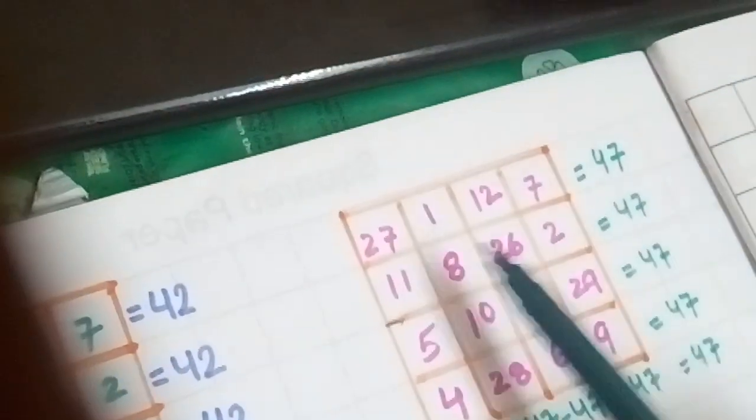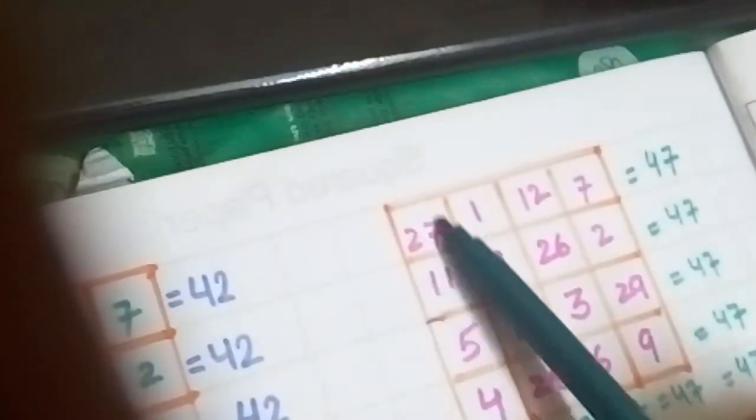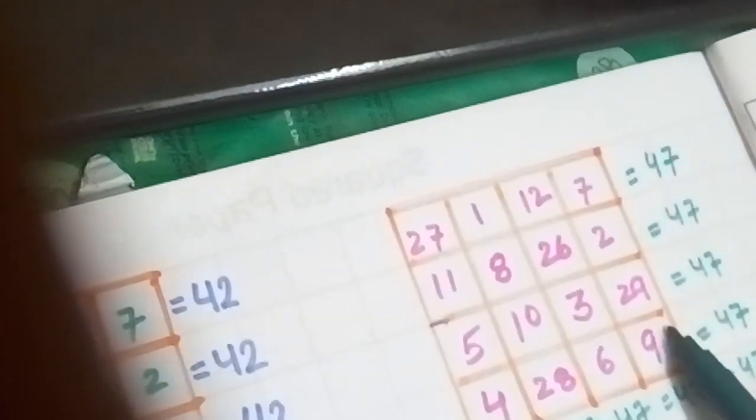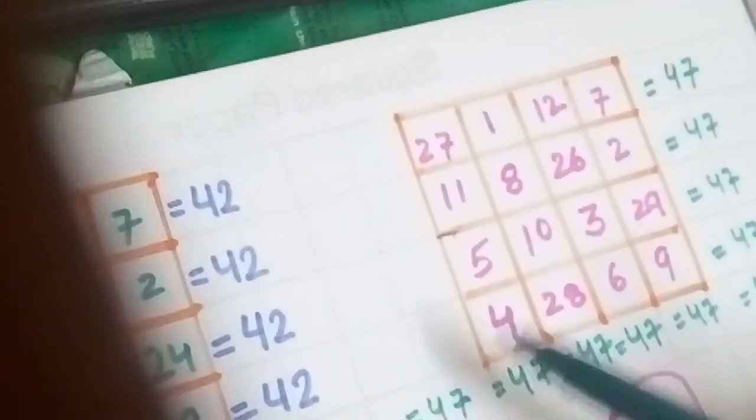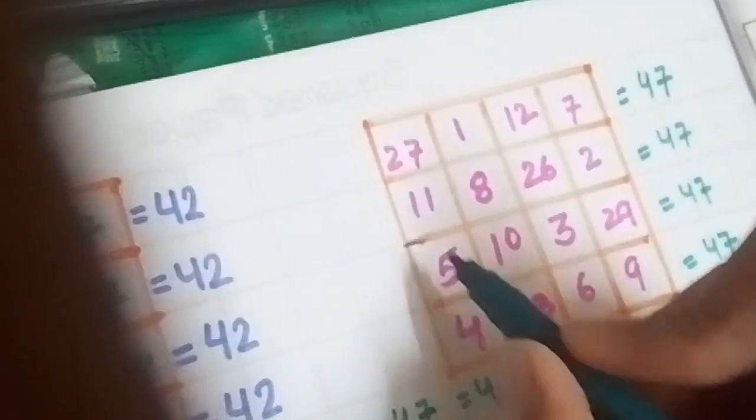Such more combinations I am going to tell you. Like you can add the corners of the square: 27, 7, 9, and 4, and that also gives you 47. Now you can also make 2 into 2 squares like this square you can choose.